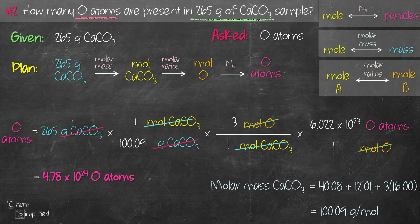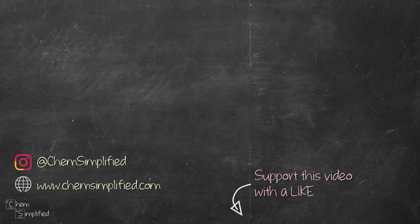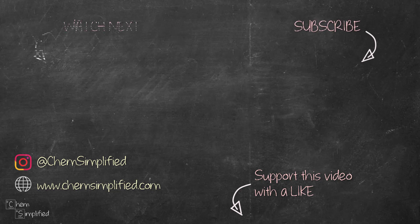Did you get the same answer? We solved a stoichiometry problem involving three steps without breaking a sweat. I like this method because I don't have to memorize whether to multiply or divide by the molar mass, molar ratio, or Avogadro's number. Let me know what you think of this method — I'd love to hear from you. If you want to see more stoichiometry problems, let me know in the comments. Thanks for watching — if you found value in the video, give it a thumbs up, share it, and subscribe for more chemistry videos.